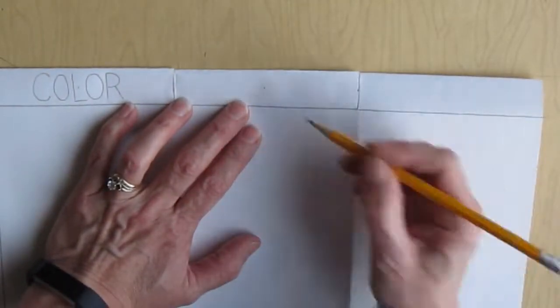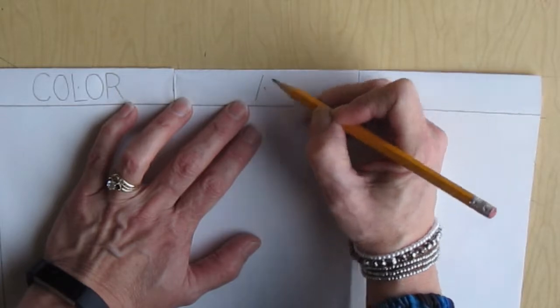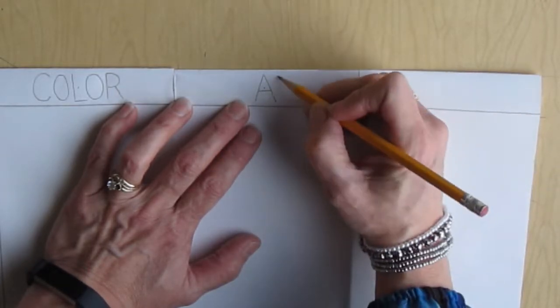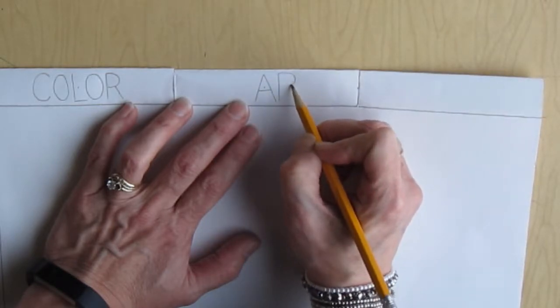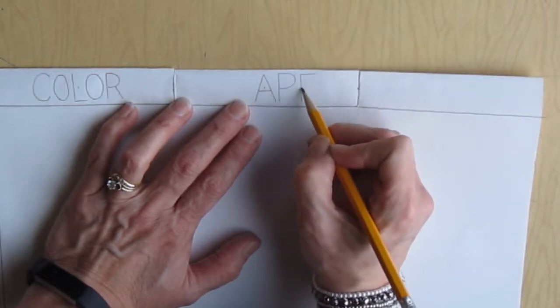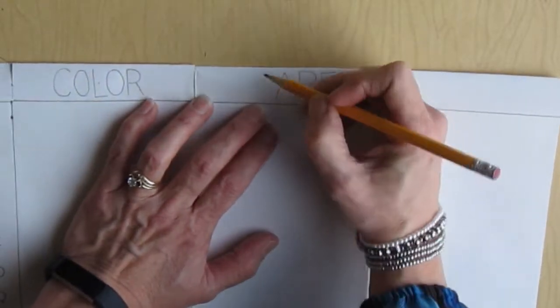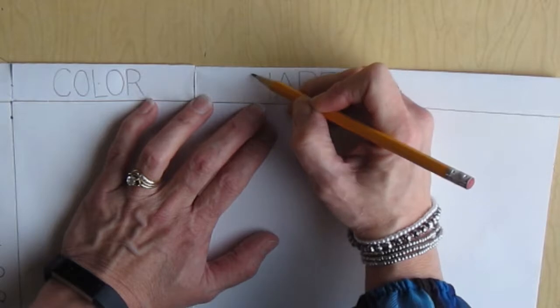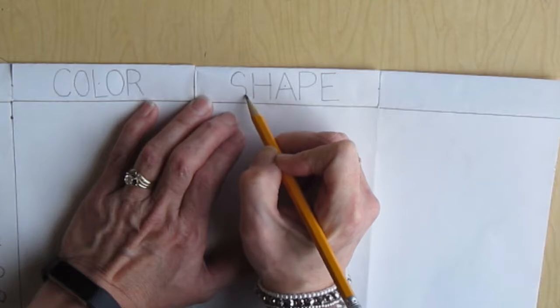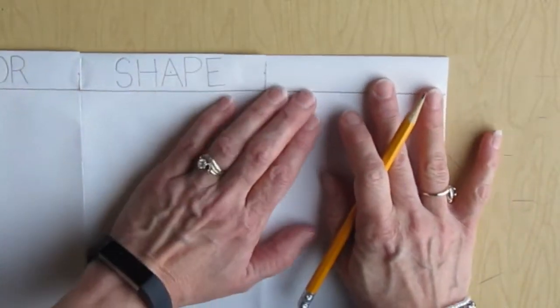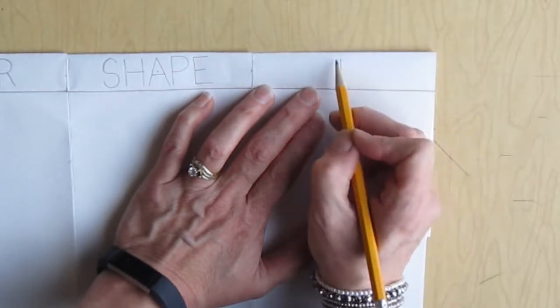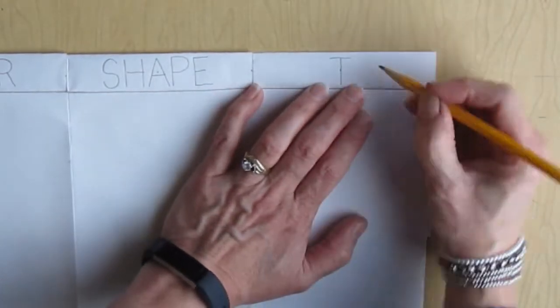The next element is SHAPE. So you're starting with the A right through the center point. Then the P and the E, and then go back and do the H and the S in the beginning.